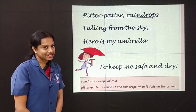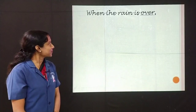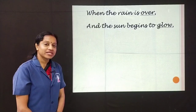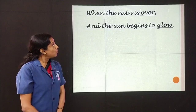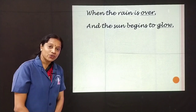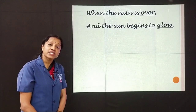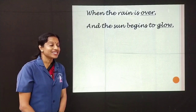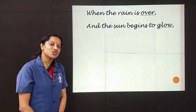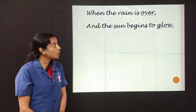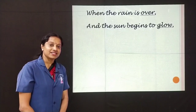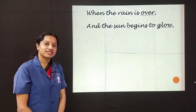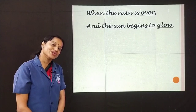Now let us go to the next stanza, children. When the rain is over and the sun begins to glow. Over here means the rain has stopped. What do you see at that time? You see the sun begins to shine. Glow here means the sun is shining. So when the rain stops, the sun begins to shine.